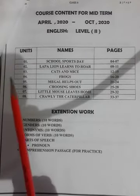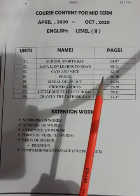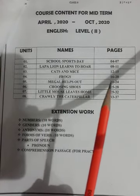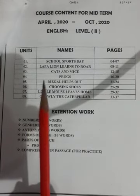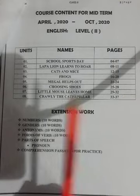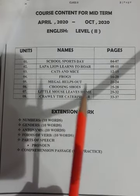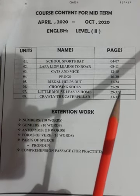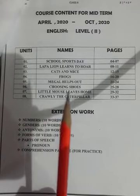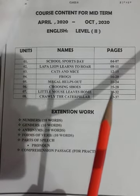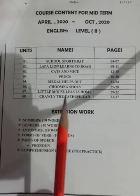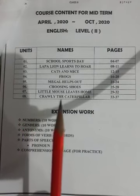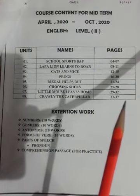Unit 1: School Sports Day, page 4 to 7. Unit 2: Lapa Lion Learns to Roll, page 8 to 11. Unit 3: Cats and Mice, page 12 to 15. Unit 4: Frogs, page 16 to 20. Unit 5: Magal Helps Out, page 21 to 24. Unit 6: Choosing Shoes, page 25 to 28. Unit 7: Little Mouse Leaves Home, page 29 to 32. Unit 8: Crawley the Caterpillar, page 33 to 37.